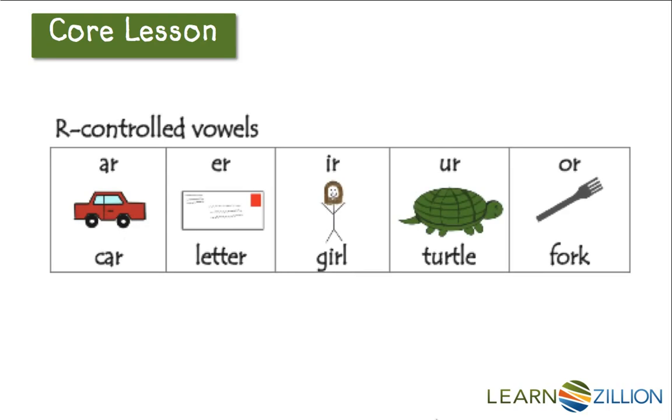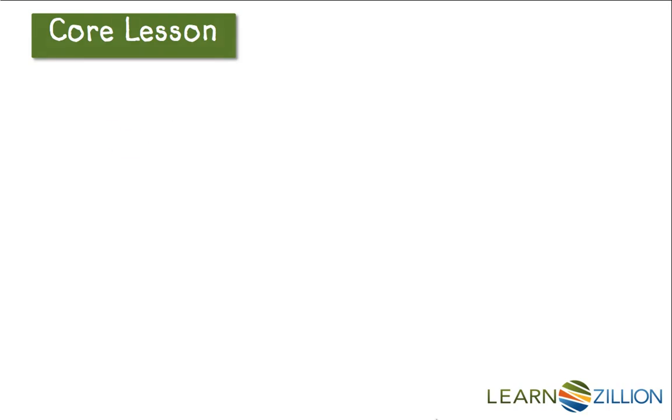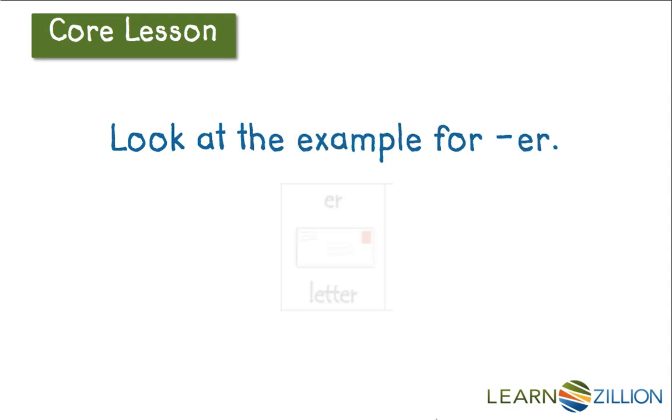In this lesson, we are going to focus on words with the ER syllable. Look at your vowel team chart. The picture with ER is a letter. We can use this to help us figure out what sound the ER makes. Since we know this word is letter, let's break it up into the sounds that we hear. L-e-t-er. Letter.